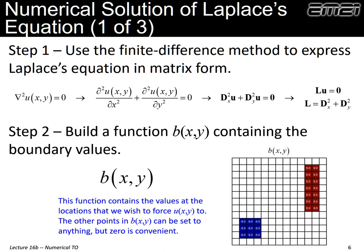So all we've done is put Laplace's equation into matrix form, but it's not yet solvable because we have LU equals zero. If we backward divide by L, we get a trivial solution. The missing information is where we're forcing values onto our grid. The second step is to build a function B which contains zeros everywhere except where we're forcing a value to a particular value — our negative nines at the lower left and positive nines at the upper right. That's our function B, our function of forced values. The way we're implementing this, it doesn't matter what we put elsewhere; zeros is convenient.